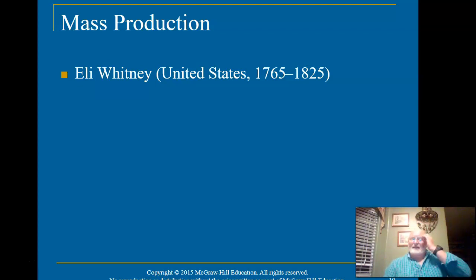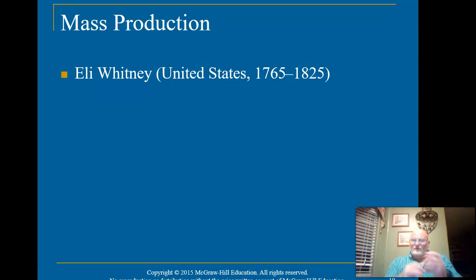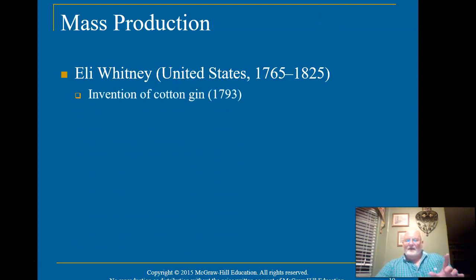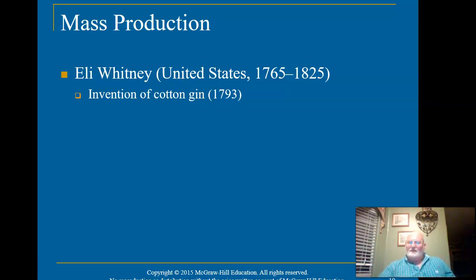When pulling the seeds out, you sit down with this mass of cotton and go through with your fingers to pull the seeds out. That is probably harder than picking cotton. This is hard work and it takes forever. Then Eli Whitney comes along and invents this thing called a cotton gin — a machine where you put cotton in, turn a crank, and it pulls out the seeds for you.